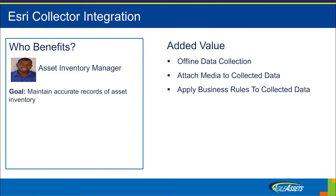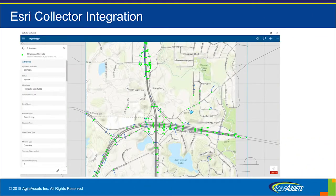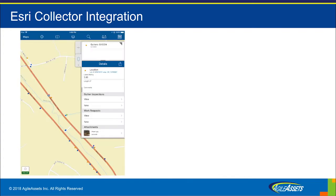Esri Collector is a mobile app that enables offline or online collection of inventory or inspections for asset classes using simple forms. To aid an asset inventory manager in keeping their inventory up to date and being able to see the spatial location of assets, we've integrated the deployment of Collector so that collected inventory or inspection data are synced directly to the associated dataset in the Agile Assets system. This integration also enables any existing business rules for an asset class to be applied to the collected data. This screen shows an inventory form for hydraulic structures, and an inspection and work request collection form with the option to attach a photo and view the last inspection report for that asset.